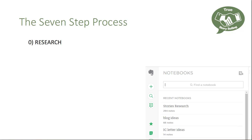Step zero in the seven-step process — yes, there is actually a step zero — is research. Everybody thinks that they have a writing problem, and that when you go to write a marketing email, it's the actual process of writing the story and the content that's hard. Whereas actually, the writing itself is learnable. The problems tend to lie in research rather than writing.